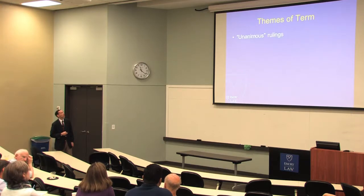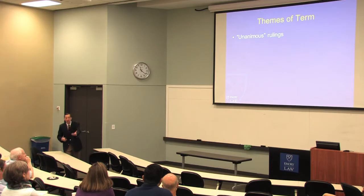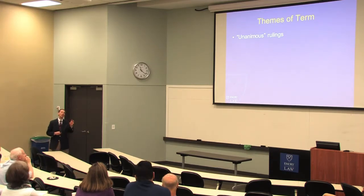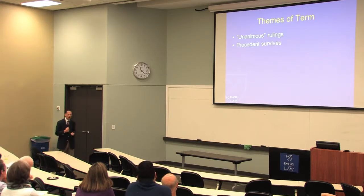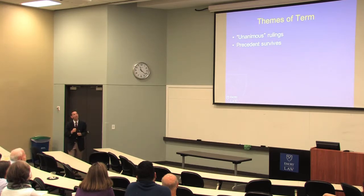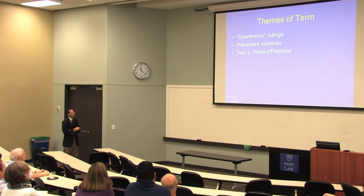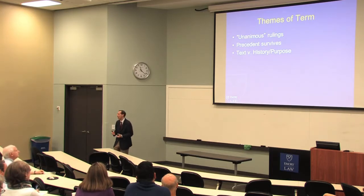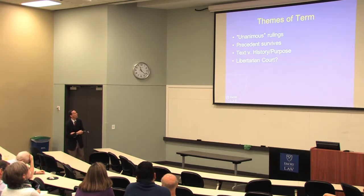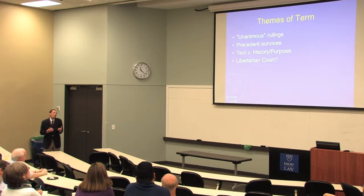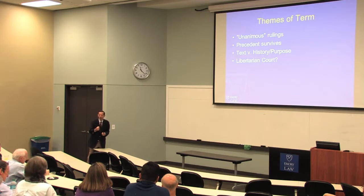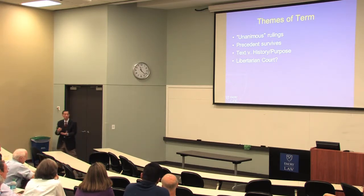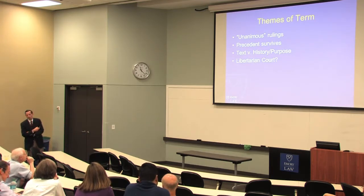So let's talk about some of the themes that we may see play out this term. We see unanimous rulings but maybe not always unanimous opinions — a 9-0 result can mask underlying divisions. We will see precedent in general survive, but there were significant challenges to precedent, suggesting a willingness in later terms to overrule certain ones. We'll see the court divided about the right way to interpret the Constitution or statutes — whether you look at the text, or the history and purpose. And then this question: is this court in some way libertarian? Skeptical about government power, perhaps a little more supportive of claims of individual rights.